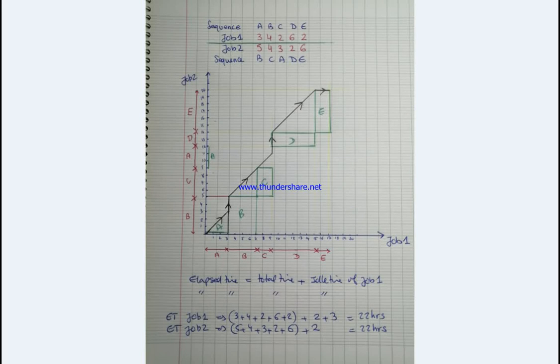How to process two jobs through m machines. We've already seen how to process two jobs through two machines, three machines. Now if we have m machines of different sequences, we have the first sequence of job one: A, B, C, D, and the second sequence of job two: B, C, A, D, E. Those are the timings: 3, 4, 2, 6, 2, 5, 4, 3, 2, 6. I've already solved this to make things easier because you know how to record it.